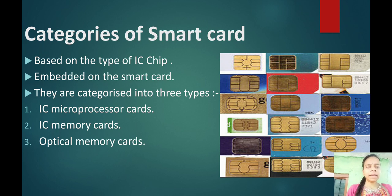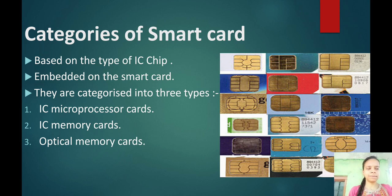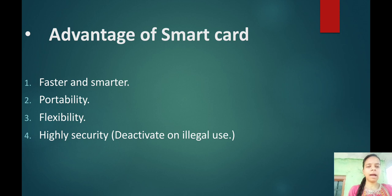Categories of smart card: There are three types of categories based on the type of IC chip embedded on a smart card. They are characterized into: IC microprocessor card, IC memory card, and optical memory card.